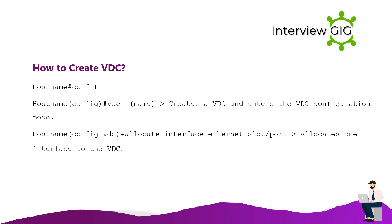How to create a VDC? Use the command: hostname# config terminal, then hostname(config)# vdc [name] — this creates a VDC and enters VDC configuration mode. Then use: hostname(config-vdc)# allocate interface Ethernet [slot/port] — this allocates one interface to the VDC.